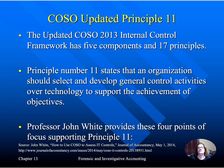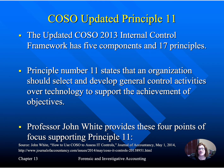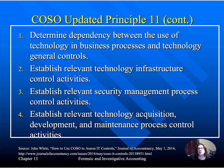COSO is now updated to Principle 11. In the new updated COSO 2013 Internal Controls Framework, there are five components and 17 principles. Principle 11 states that an organization should select and develop general control activities over technology to support the achievement of objectives. Professor John White provides four points for Principle 11: determining dependency between technology use and business processes, establishing relevant technology infrastructure control activities, establishing relevant security management processes, and establishing relevant technology acquisition, development, and maintenance process control activities.